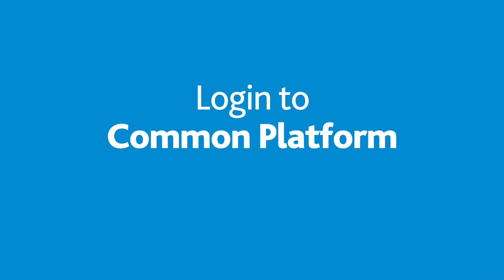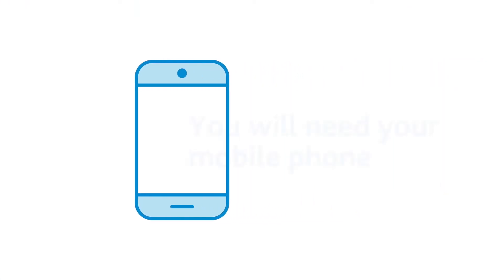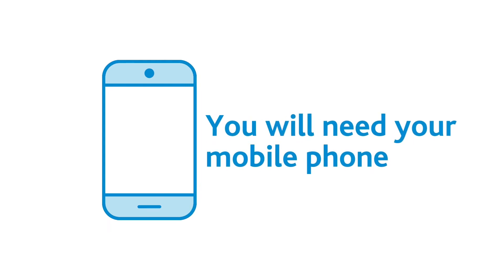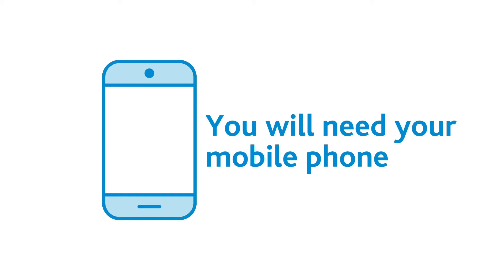To log in to Common Platform, you will need to have your registered mobile phone with you. You will need to use the Authenticator app you downloaded as part of the registration process and follow the instructions on screen.